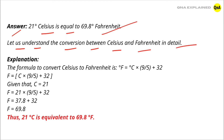The formula to convert Celsius to Fahrenheit is: Fahrenheit = Celsius × 9/5 + 32. Given that Celsius = 21, Fahrenheit = 21 × 9/5 + 32.